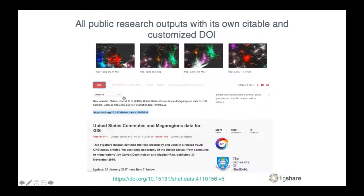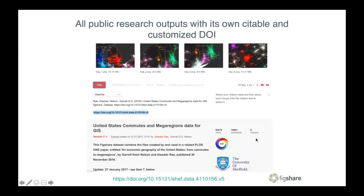All public outputs have their own citable and customized DOI. Here is an example of a record from the University of Sheffield showcasing 43 different files — it doesn't have to be one item at a time; it can be a multitude of different research data outputs. This is a great example of showing usage metrics like views and downloads, altmetric attention, and along the way, citations.